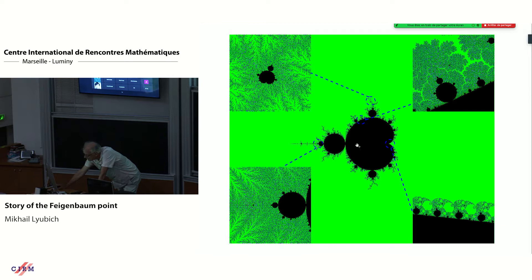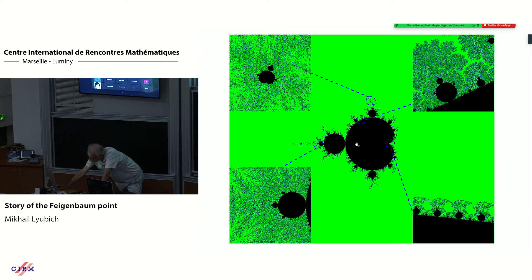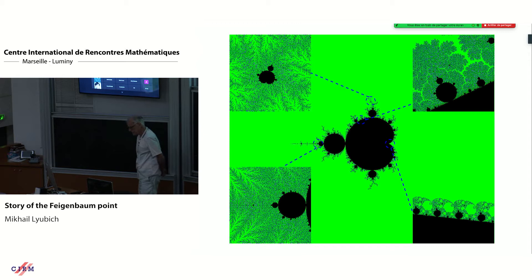This Feigenbaum point appears through the cascade of period doubling bifurcations, which was discovered actually not by Feigenbaum but in the 60s by Myrberg. He observed that when we cross this bifurcation point, the attracting cycle of period one - the attracting fixed point - becomes an attracting cycle of period two. And through this cascade of period doubling bifurcations, all the way to the limiting Feigenbaum point. This point is a boundary point in between regular and chaotic dynamics, at least on the real line.